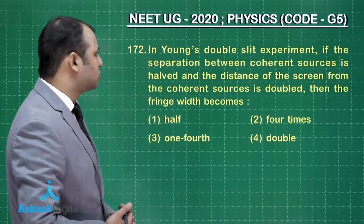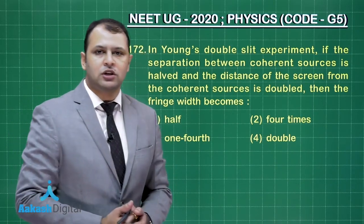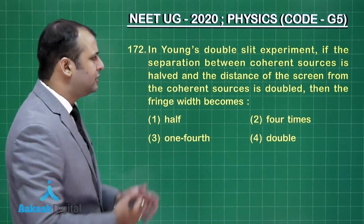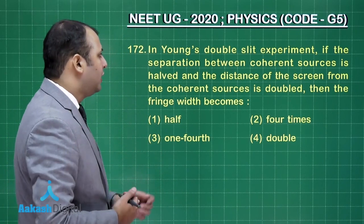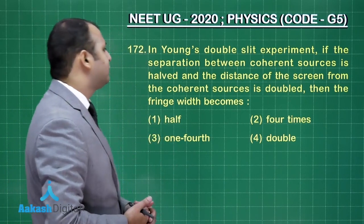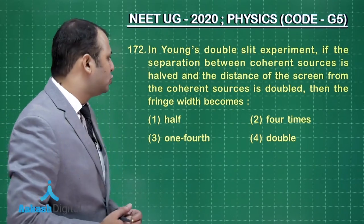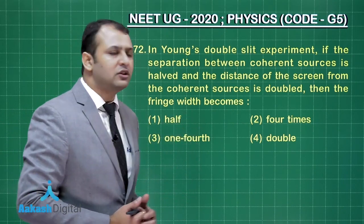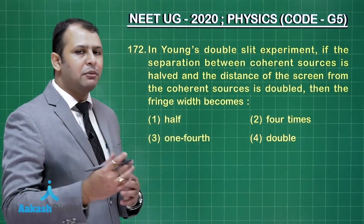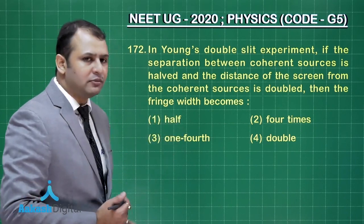Let's take our next question, that is question number 172. This question belongs to chapter wave optics and it's a simple question. In Young's double slit experiment, if the separation between the coherent sources is halved and the distance of the screen from the sources is doubled, then the fringe width becomes?